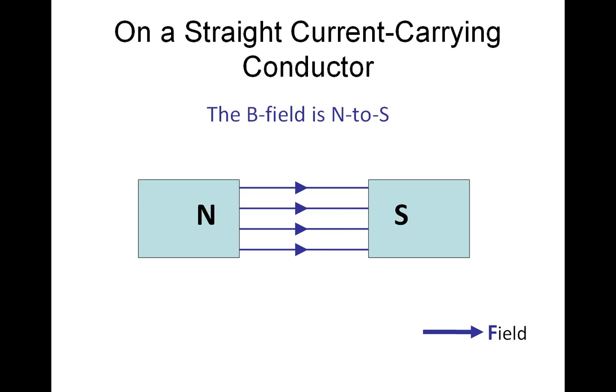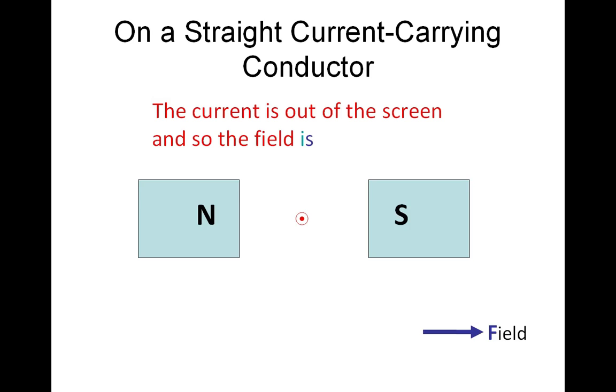As our B field is to the right, we pass a current through that B field. This one's coming out of the board, out of the screen, and we get an anti-clockwise field using the right hand thumb rule.